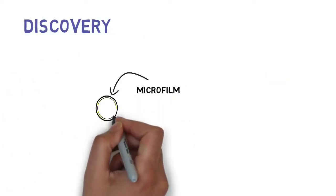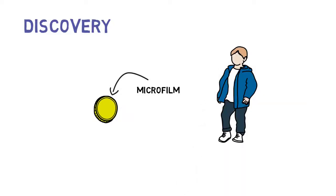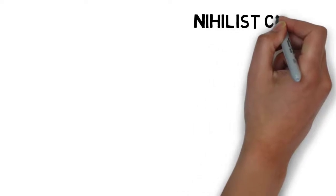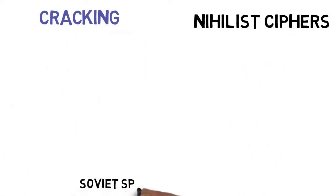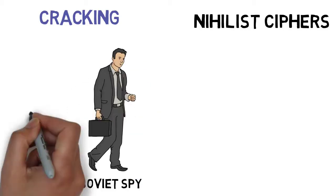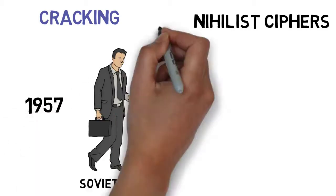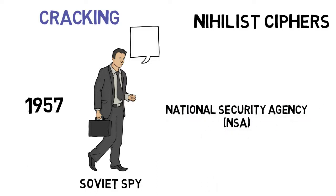It was discovered on a piece of microfilm inside a hollowed-out 5-cent coin by a newspaper boy in 1953. Considered to be part of the nihilist family of ciphers, the VIC cipher was not cracked until the Soviet spy who used it defected in 1957 and explained its inner workings to the NSA.